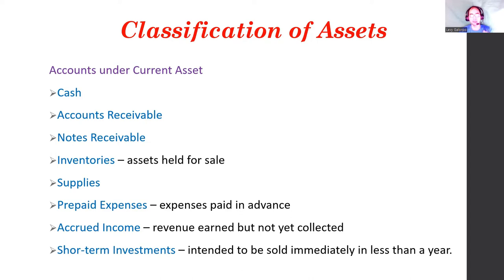Accounts under current assets include: cash, accounts receivable, notes receivable, inventories (which are assets held for sale — the goods the company sells), supplies, prepaid expenses (expenses paid in advance, such as three months' rent paid ahead), accrued income (revenue earned but not yet collected — its nature is receivable), and short-term investments intended to be sold within less than a year.